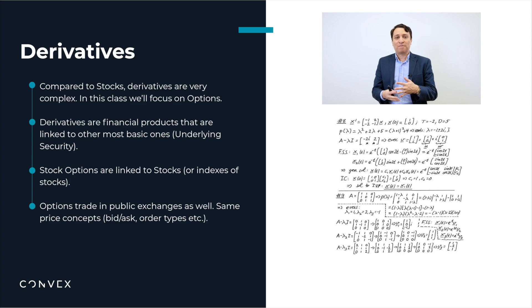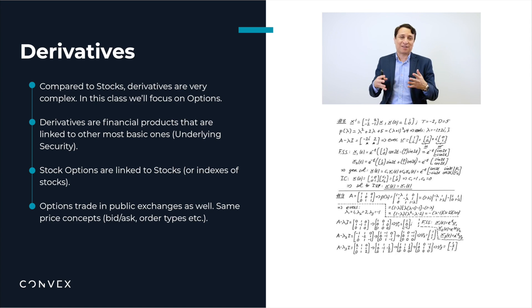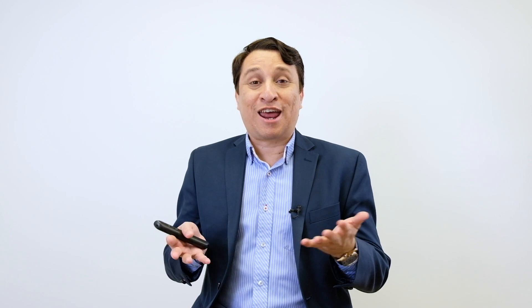Most of the interest in derivatives trades in those markets. However, for the purpose of this class, we are going to talk about stock options, and options do trade in public markets and have the same features, at least in terms of quotations, that stocks have. They have prices, they have bid, they have ask, and you can use the same orders that you use to buy stocks to buy options. So, options are derivatives, and therefore, they are also very complex.